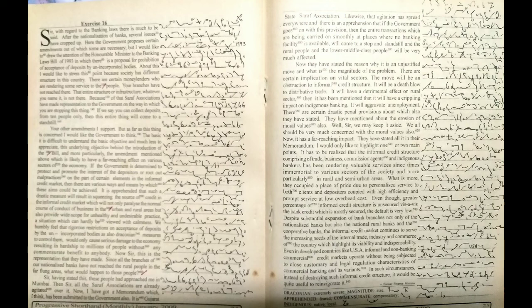Your branches have not reached there. That entire structure or infrastructure, whatever you name it, is not there. Because of that, Saraf associations have made representation to the government on the way in which you are stopping this. If we say you can collect deposits from 10 people only, then this entire thing will come to a standstill.